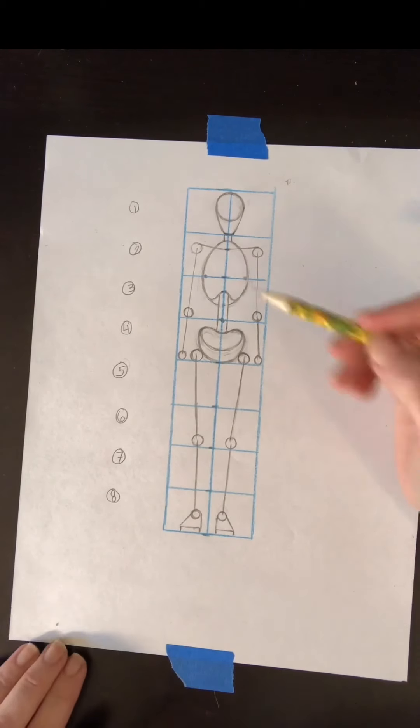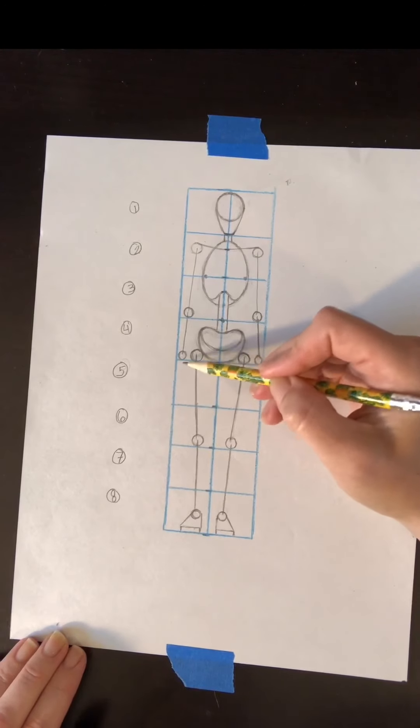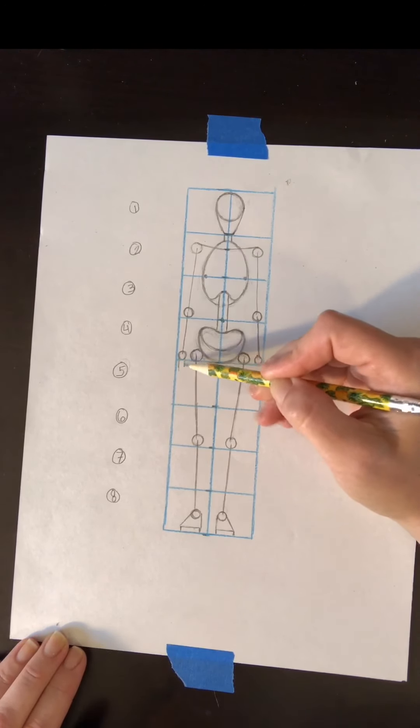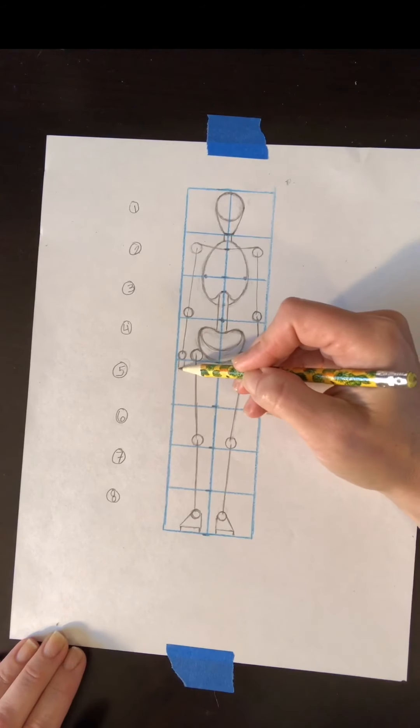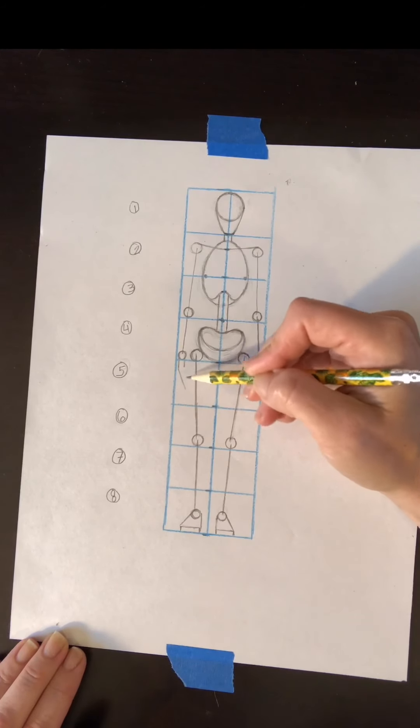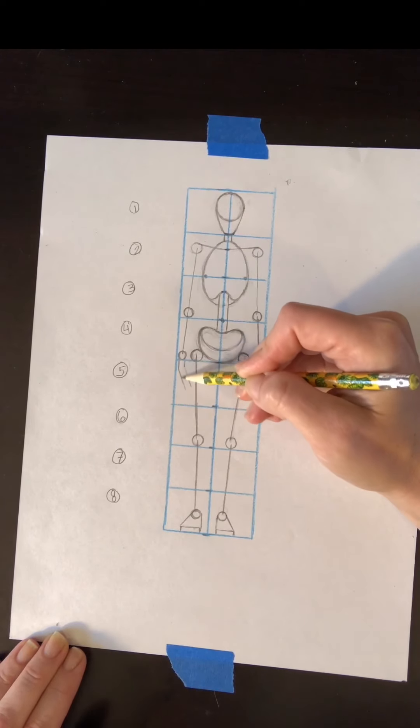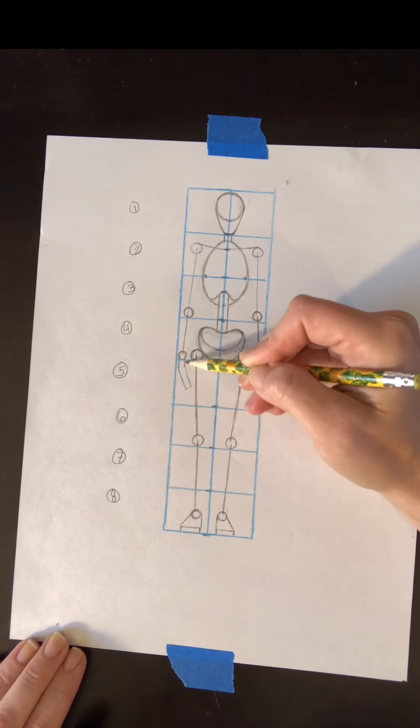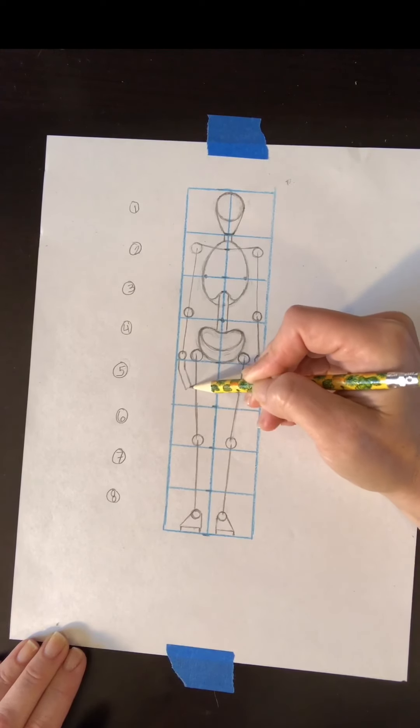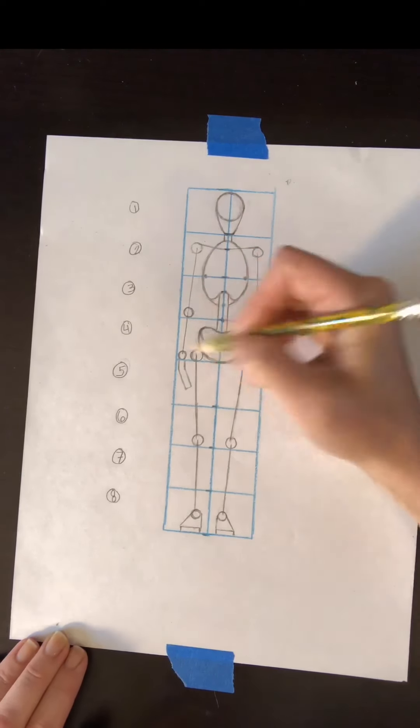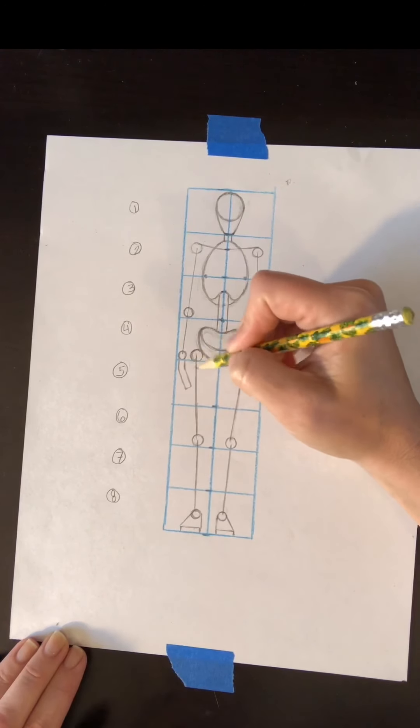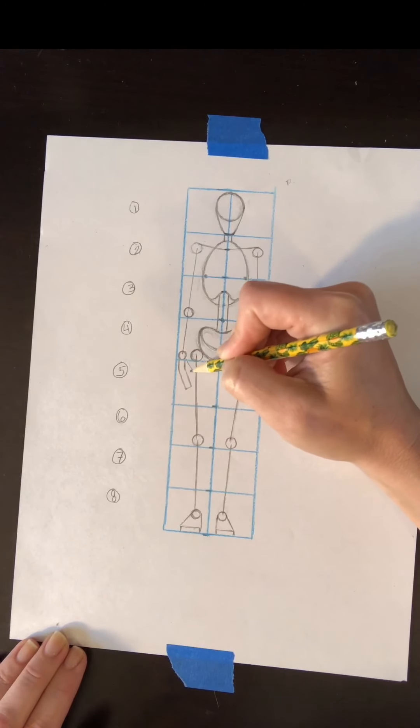And to draw the hands we're going to have two lines come out of the wrist that go straight down and then two longer lines that angle in towards the leg that make up the fingers. So there's the palm of the hand with the two straight lines, the fingers with the longer ones, and then we can just attach a little thumb right there.